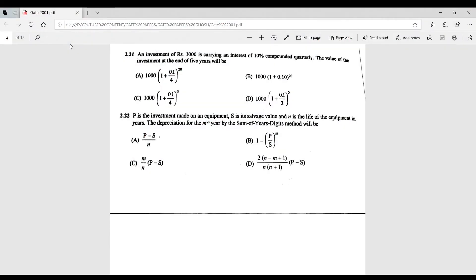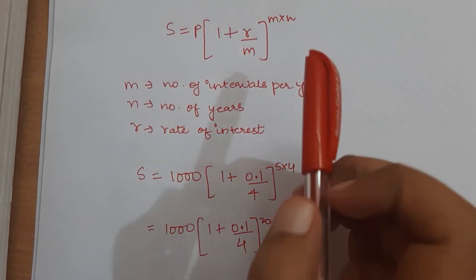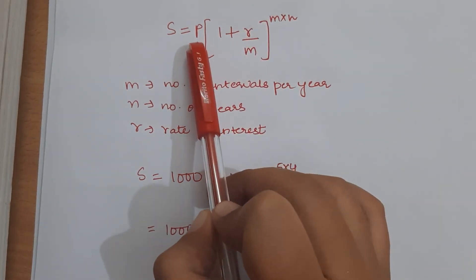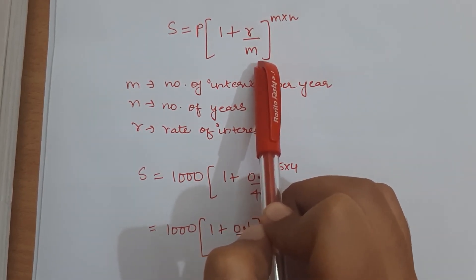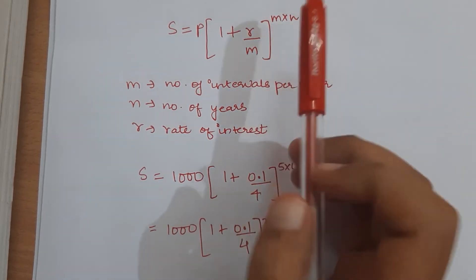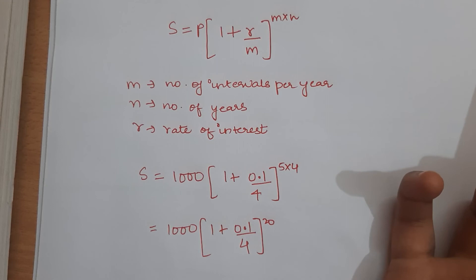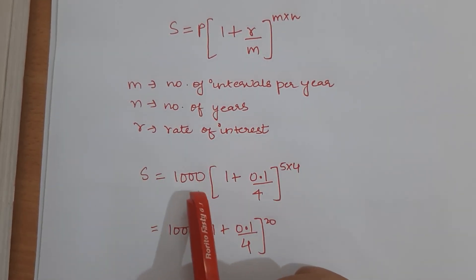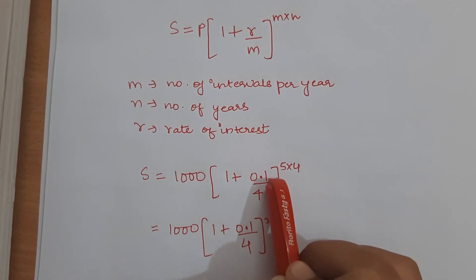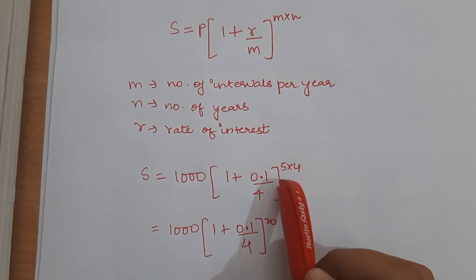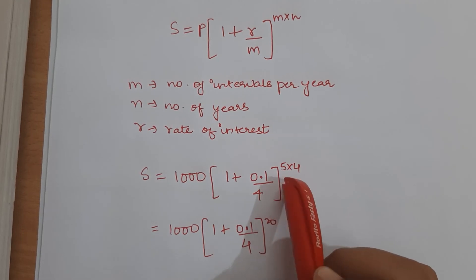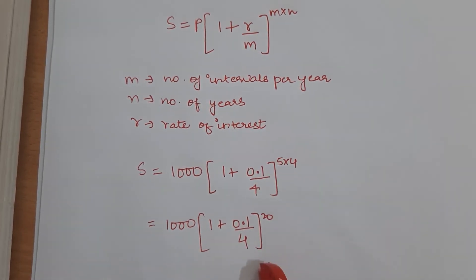Question 2.21: find the value of an investment at the end of 5 years. Using the compound interest formula: FV = P·(1 + r/m)^(m·n), where P = 1000, r = 0.1 (10%), m = 4 (quarterly), and n = 5 years. The exponent becomes 5 × 4 = 20, giving the correct answer.